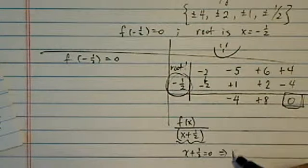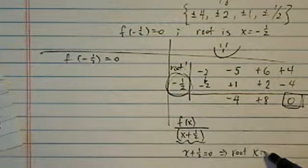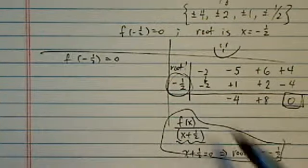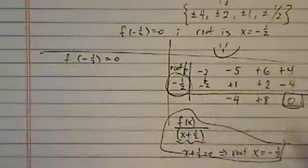So when you divide the root, which is minus half, you're really actually dividing x plus half. Because x plus half, if you set it equal to zero, that gives you the root x equal to minus half.